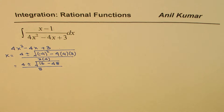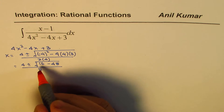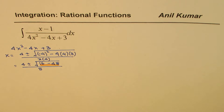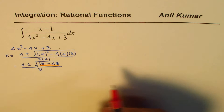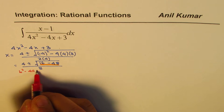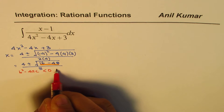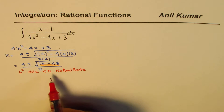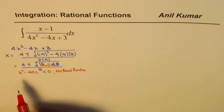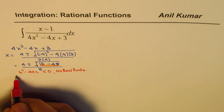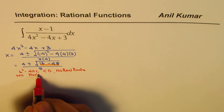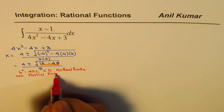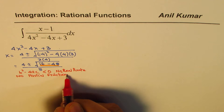Since the term inside the square root is negative, the roots are not real. You could have checked this earlier using the discriminant: b squared minus 4ac is less than 0, so there are no real roots. Because the denominator cannot be factored, partial fractions cannot be applied.